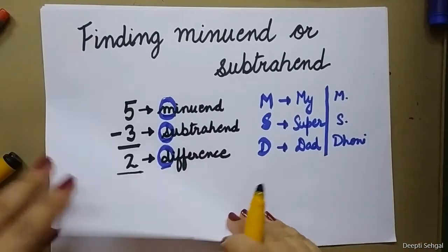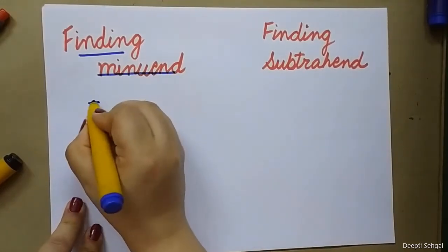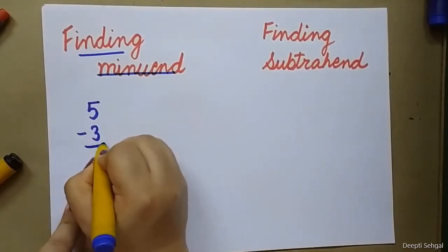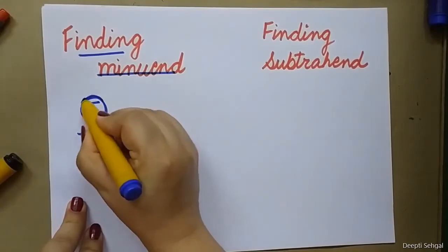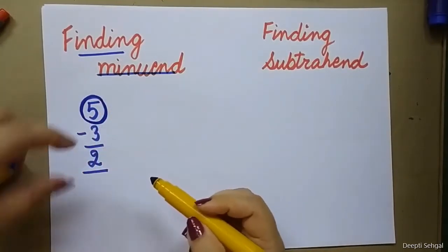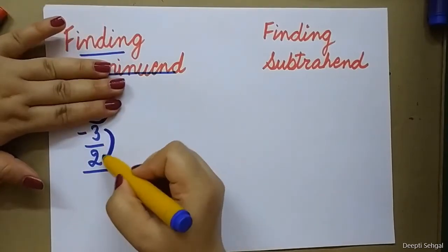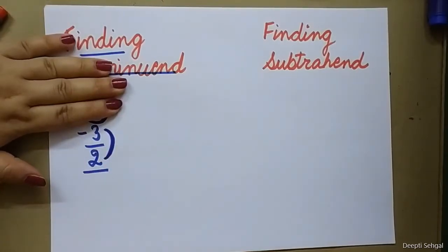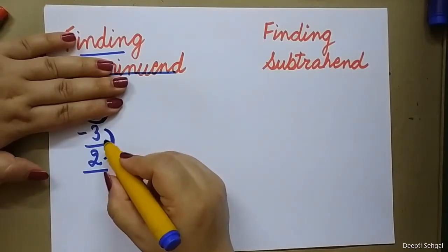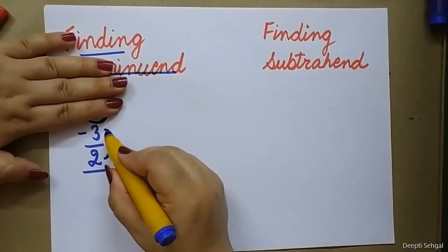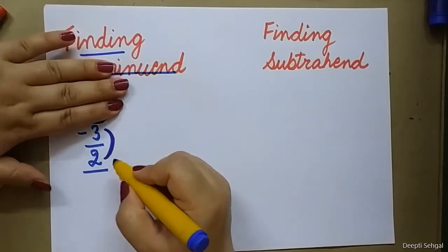So let's begin. Let's understand how we can find the minuend. See children, 5 minus 3 is equal to 2. Which is minuend here? This is minuend — 5. Now what do you think, how will 5 come? What we will do with 3 and 2 so that I get 5? 3 added to 2 is 5.